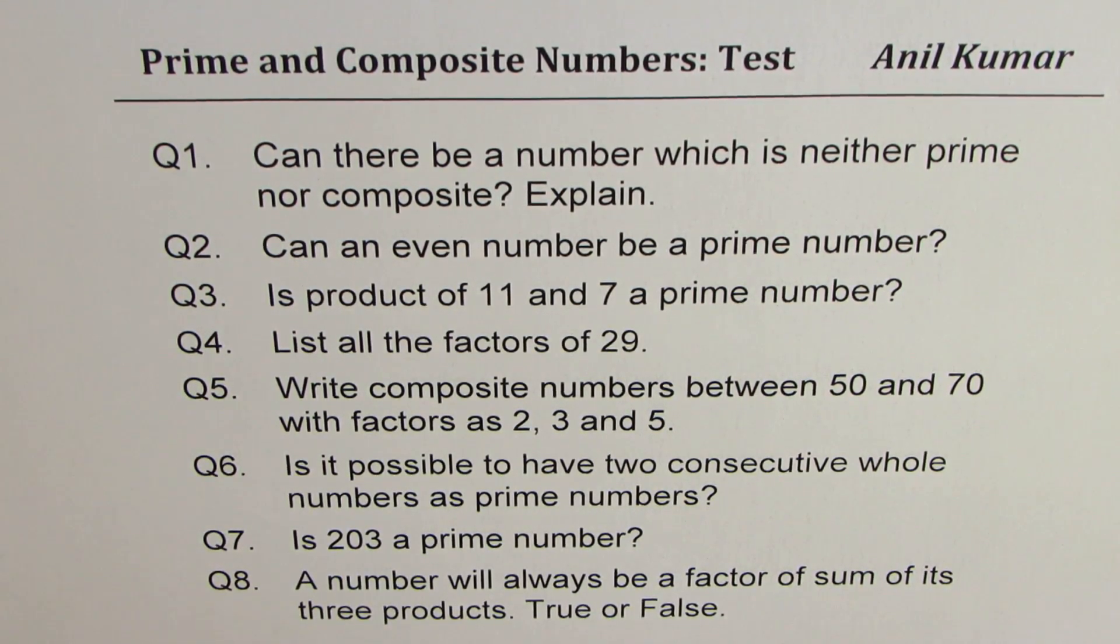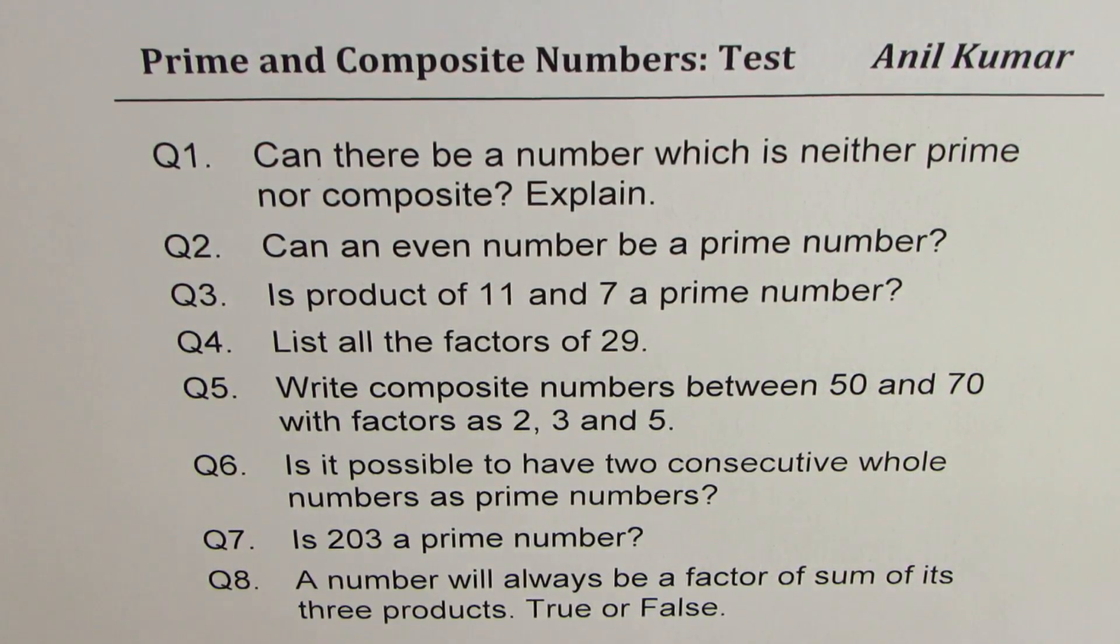Question number one: Can there be a number which is neither prime nor composite? Explain. Question number two: Can an even number be a prime number? Question number three: Is product of 11 and 7 a prime number? Question number four: List all factors of 29. Question 5: Write composite numbers between 50 and 70 with factors as 2, 3, and 5. Question 6: Is it possible to have two consecutive whole numbers as prime numbers? Question 7: Is 203 a prime number? Question 8: A number will always be a factor of sum of its three products. True or false?